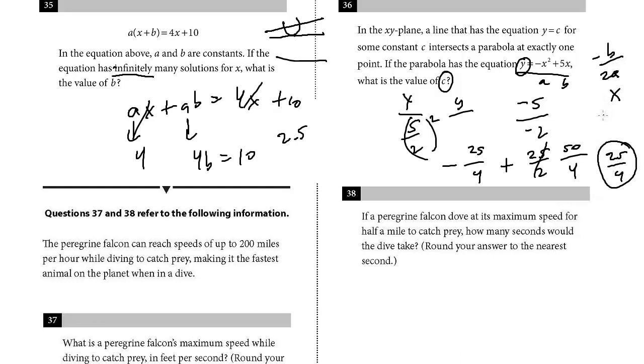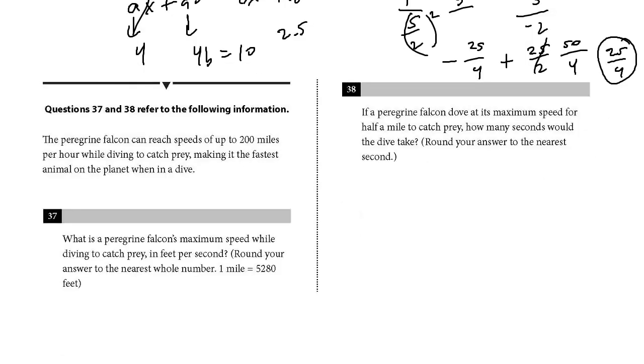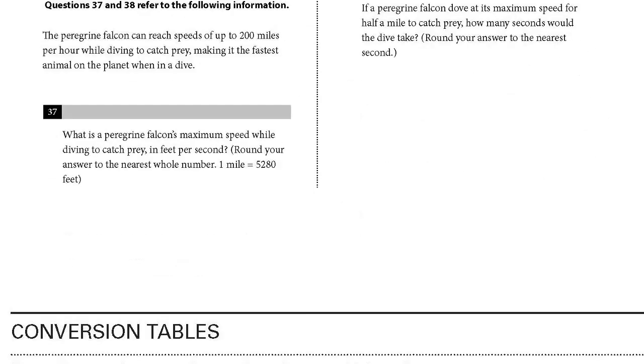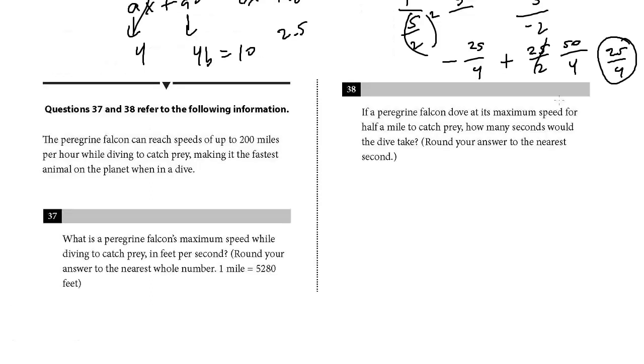Alright. So if you remember negative b over 2a, that'll make that question a lot easier. Okay. Let's do the last two problems. And it looks like we have a paired question for number 37 and 38. The peregrine falcon can reach speeds of up to 200 miles per hour while diving to catch prey, making it the fastest animal on the planet when in a dive.